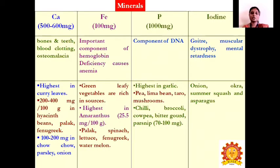Regarding minerals — calcium, iron, phosphorus, and iodine: calcium-rich vegetables highest in content include parsley at 200 to 600 mg, hyacinth bean, palak, and fenugreek at 200 to 400 mg, and chow chow, parsley, and onion at 100 to 300 mg. Deficiency of calcium leads to bone and teeth problems, blood clotting issues, and osteomalacia. Iron is an important component of hemoglobin, and its deficiency leads to anemia. Green leafy vegetables are rich sources of iron, with amaranthus being highest at 25.5 mg per 100g. Other iron-rich vegetables include spinach, lettuce, fenugreek, and watermelon.